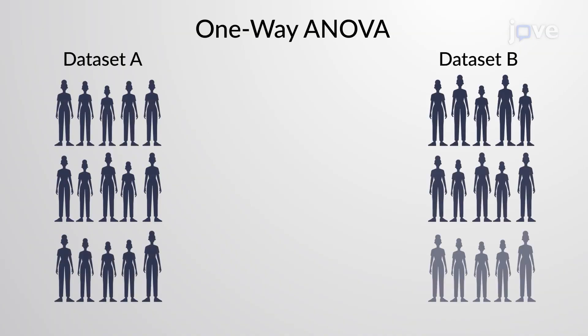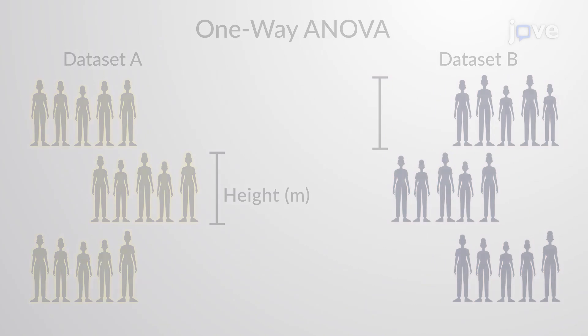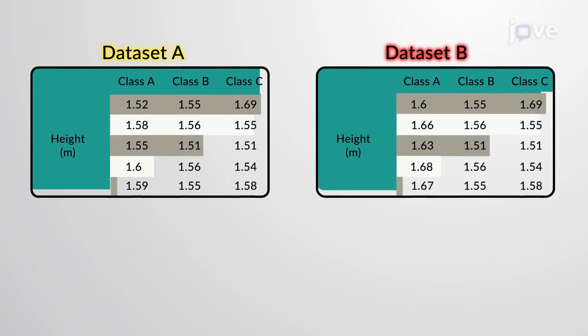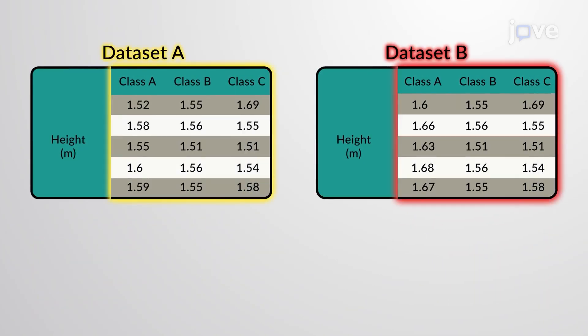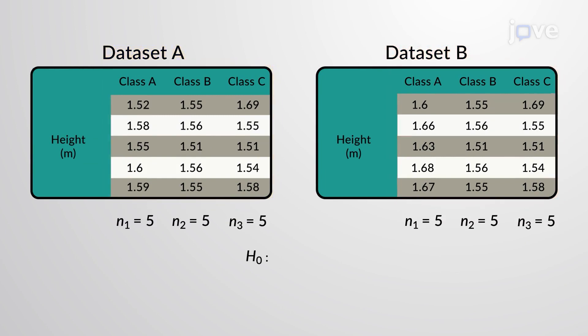Consider performing a one-way ANOVA on two different data sets, each containing the heights of students from three samples. Notice that in both data sets, all three samples have equal sample sizes. Here, we can state the null hypothesis that the mean heights of all three samples are equal.